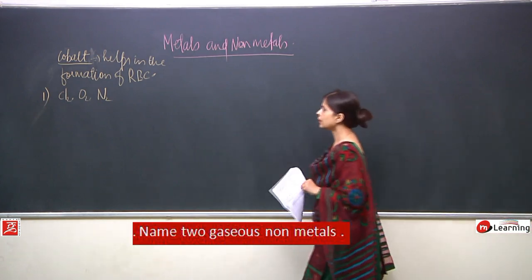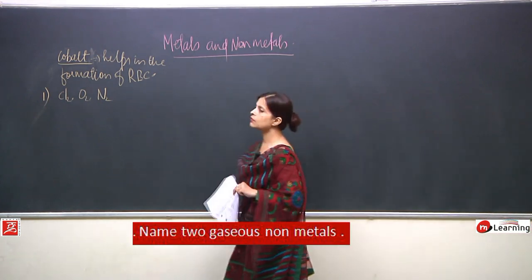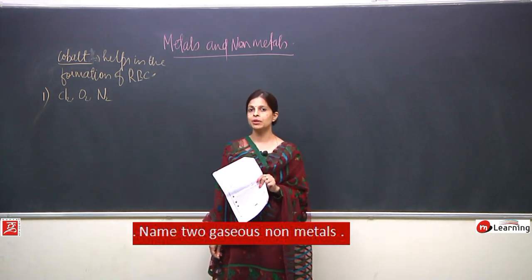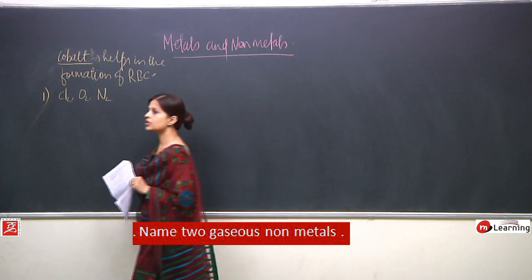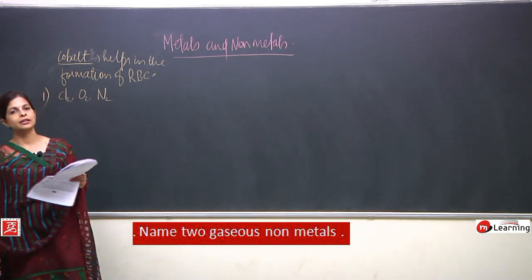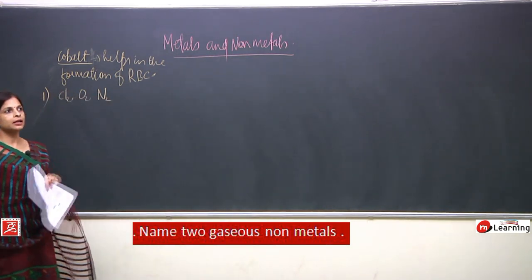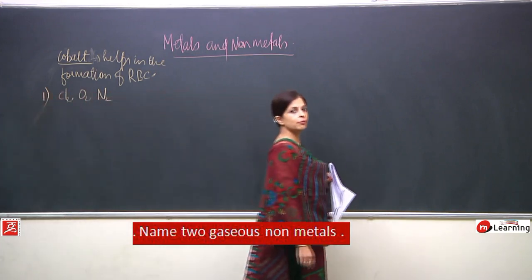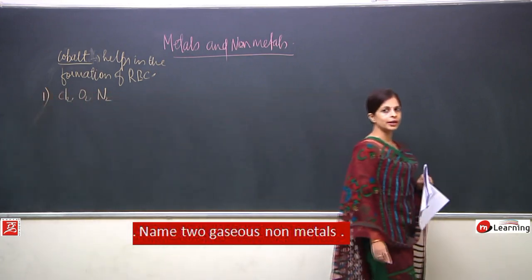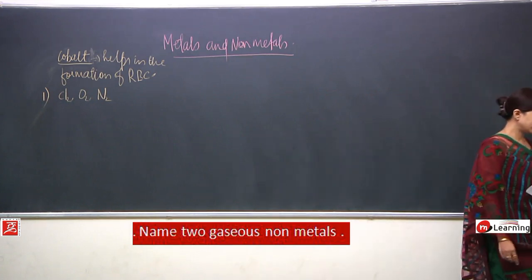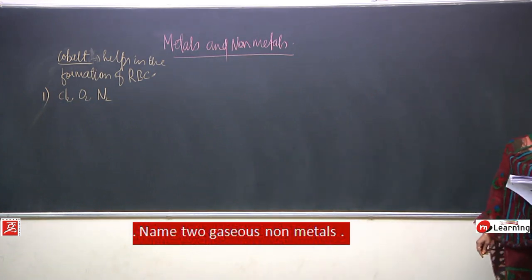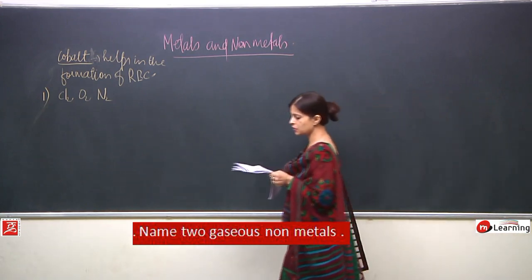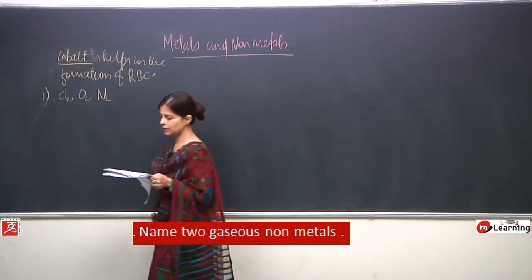Quick revision: name the non-metal present in solid form at room temperature that also has lustre — it is iodine. The non-metal present in liquid form is bromine. The next question also asks: name a non-metal found in liquid state, which is bromine.